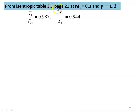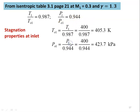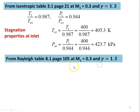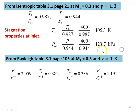From isentropic table 3.1, page 21, at M1=0.3, gamma=1.3: T1/T01=0.987, P1/P01=0.944. Stagnation properties: T01=400/0.987=405.3 K, P01=400/0.944=423.7 kPa. From Rayleigh table 8.1, page 105, at M1=0.3, gamma=1.3: P1/P*=2.059, T1/T*=0.382, T01/T0*=0.336, P01/P0*=1.191.